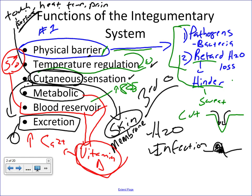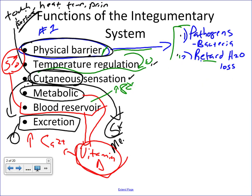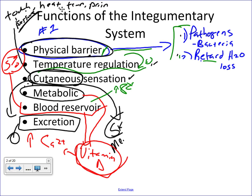In a nutshell, these are the major functions of skin. Always keep in mind that the number one function is the physical barrier — keeping pathogens from getting in and controlling the amount of water being lost. Skin can also play a role in immunity.